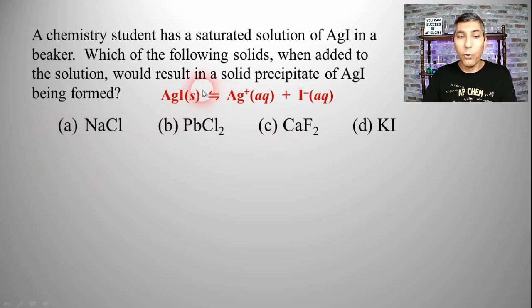If we're going to form the solid precipitate of silver iodide, like it says in the problem here, then we're going to need something that's going to shift this equilibrium toward the reactant side. A couple ways to do that would be to add in some silver ions. As it turns out, I don't see any of these four choices that have silver ions in them, although that would work.